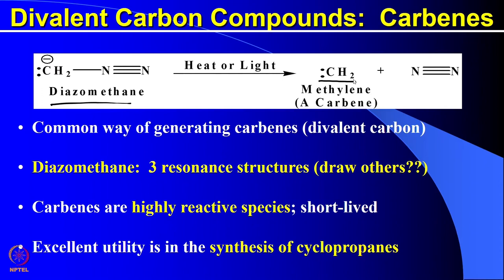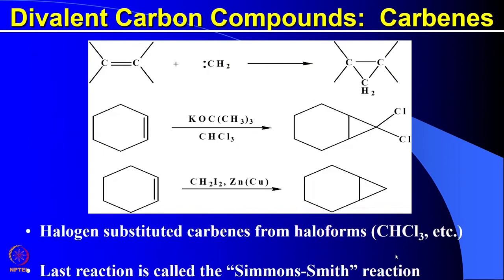Diazomethane has three resonating structures — try to draw those yourselves. These carbenes are highly reactive species and short-lived, so they should be generated in situ immediately for the reactions. They are utilized for making a number of cyclopropane derivatives in organic synthesis.